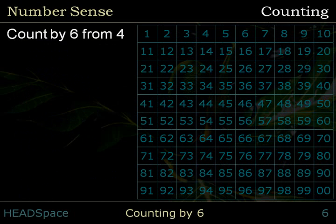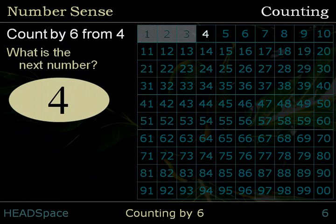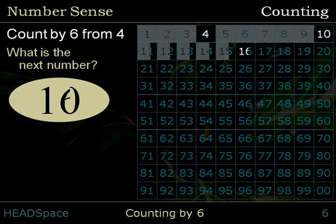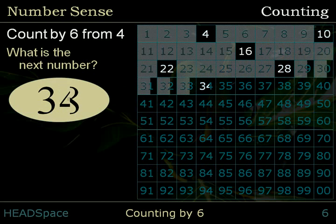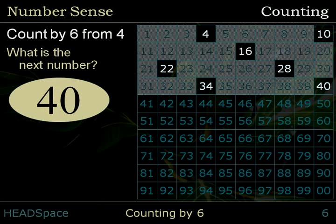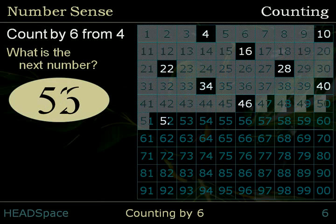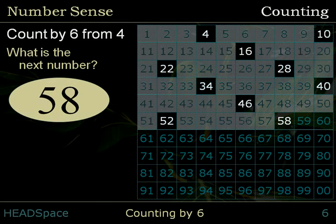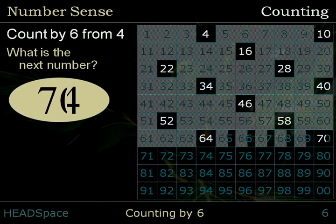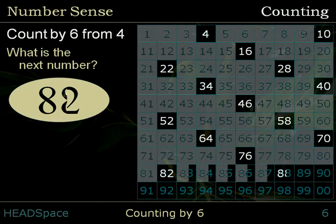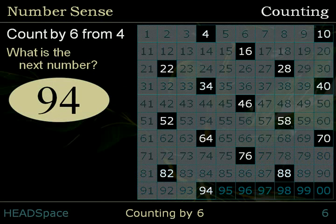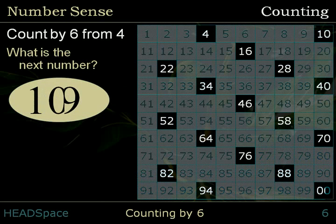Count by 6 from 4. What is the next number? 4, 10, 16, 22, 28, 34, 40, 46, 52, 58, 64, 70, 76, 82, 88, 94, 100.